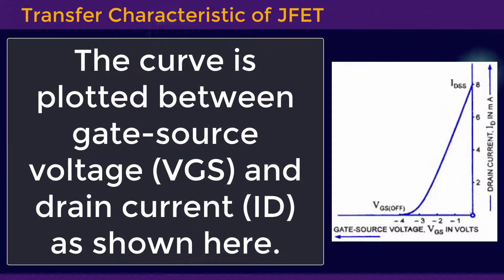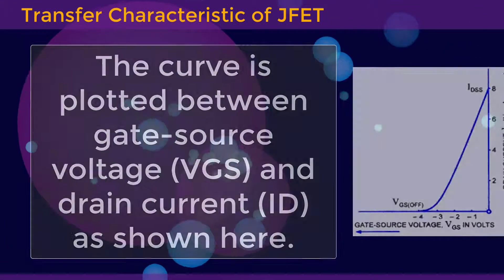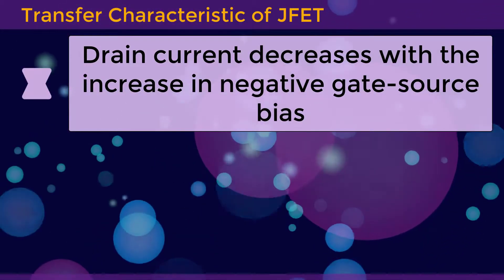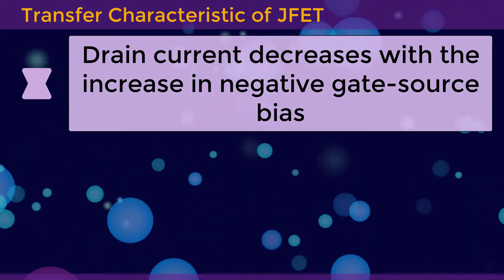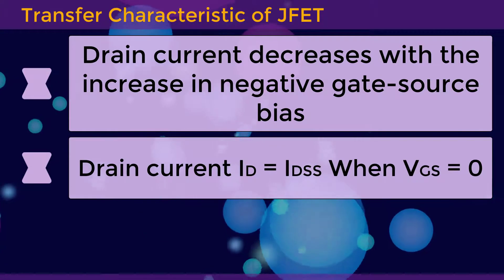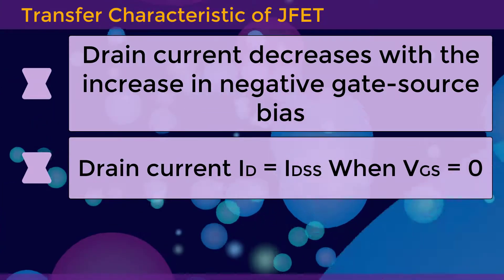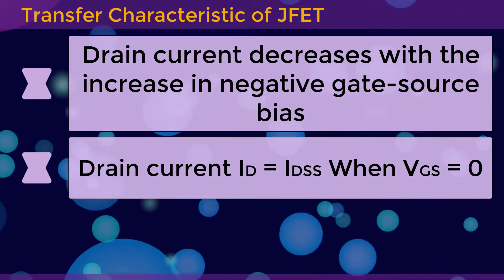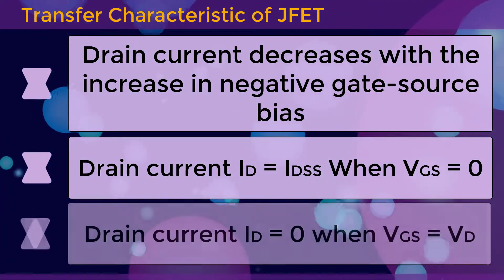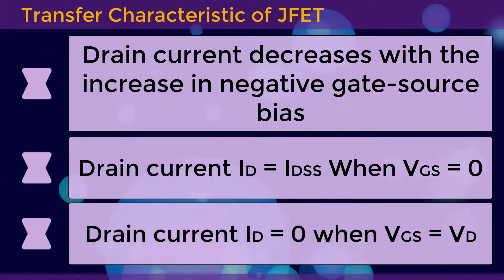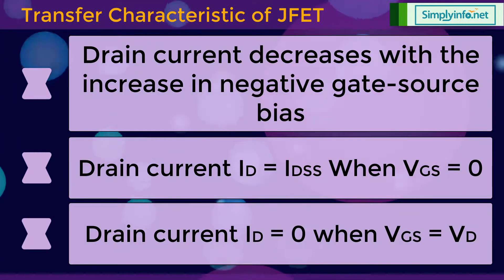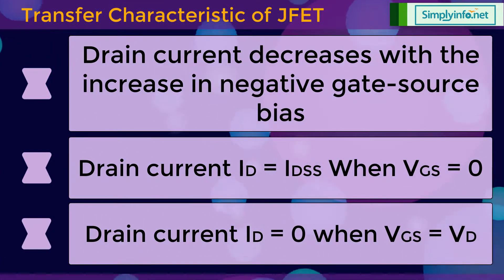It can be observed that: 1. Drain current decreases with the increase in negative gate-source bias. 2. Drain current ID is equal to IDSS when VGS equals 0. 3. Drain current ID is equal to 0 when VGS is equal to VP (pinch-off voltage).